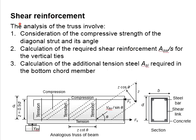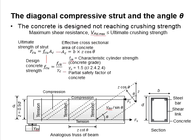In the analysis of the truss, we need to consider the compressive strength of the concrete and its angle. As there is a limit to the compressive strength of the concrete, it is essential to ensure the concrete is designed not to reach crushing strength. Therefore, the maximum shear resistance of the member needs to be smaller than the ultimate crushing strength of the concrete.